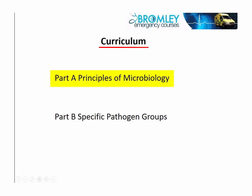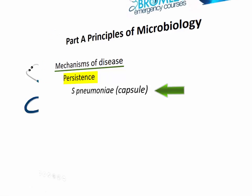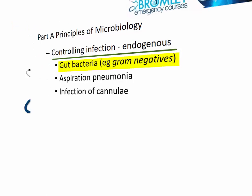The first is principles of microbiology. The spleen is very important in dealing with capsulated organisms — if you haven't got a spleen, you're even more vulnerable. Gut bacteria are also the source of infection in many gram-negative sepsis cases, particularly in patients who are immunosuppressed.